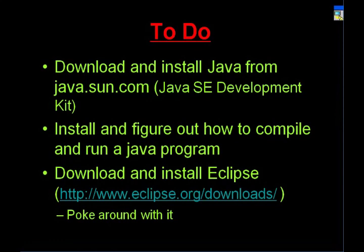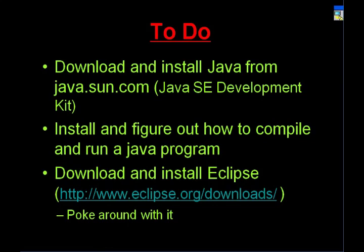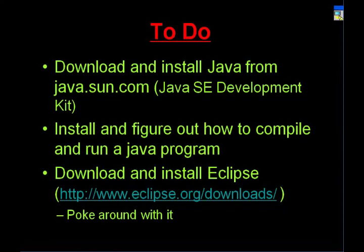The JDK actually has a Java compiler built in. Go to your command prompt, type 'javac' followed by the name of the file you want to compile. Then do 'java' followed by the name of the class to run it. Get the Java SE developer kit — don't get EE, which is the Enterprise Edition and is much more complex. Just get the Java developer edition and poke around with it. If you have questions, post them in the forum or ask your tutors.